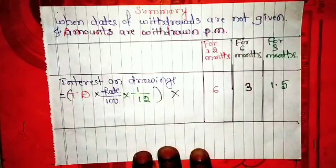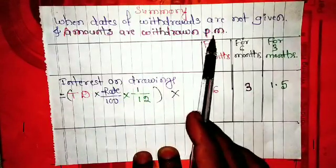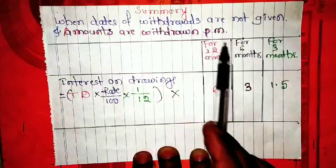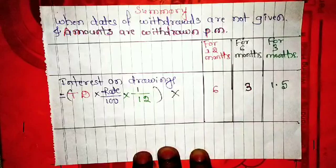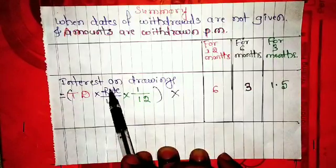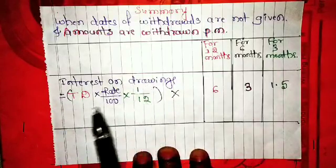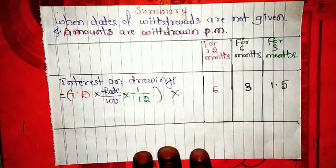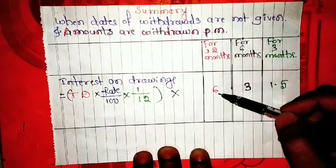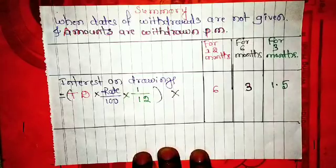When the date of drawings is not given — not specified in the question — but amounts are withdrawn per month for 12 months, for 6 months, or for 3 months, then in such cases: Interest on drawings = Total drawings × rate ÷ 100 × (1 ÷ 12). As already told, this formula is the same in all cases, but only the multiplication of the average period changes. If it is for 12 months, multiply by 6; if for 6 months, multiply by 3; if for 3 months, multiply by 1.5.